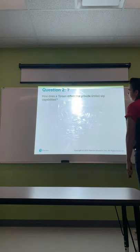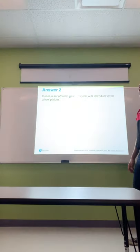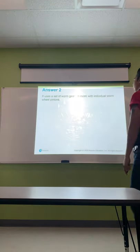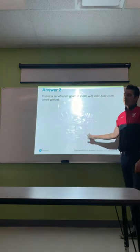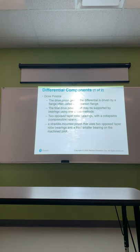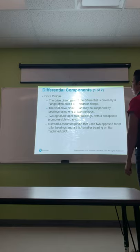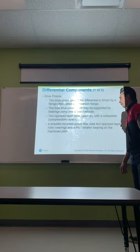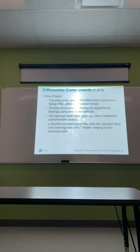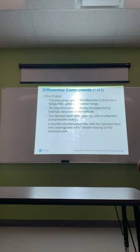The torsion differential provides limited slip capability by using a set of worm gears matched with individual wheel pinions rather than clutch plates inside. Drive pinions: the drive pinion gear of the differential is driven by a flange often called a companion flange. The final drive pinion shaft may be supported by bearings using one of two methods: two opposed tapered roller bearings with a collapsible spacer, or a straddle-mounted pinion using two opposed tapered roller bearings and a third smaller bearing on the machine pilot.